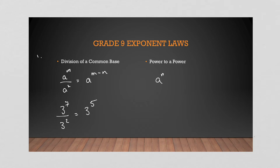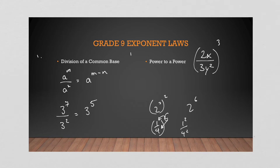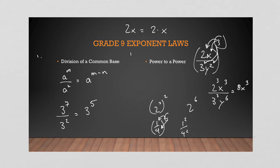Power to power — that's when you multiply. For example, (2³)² = 2⁶. With fractions: (1/4)² = 1²/4². Stepping it up: (2x/3y)³ — remember 2x is just 2 times x, so that three comes into each part: you get 2³x³ over 3³y⁶, which simplifies to 8x³ over 27y⁶.